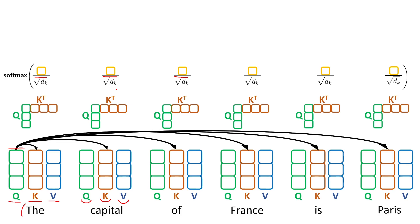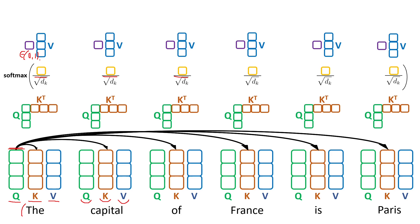The next operation is to apply the softmax to all the scalars, and what you obtain is basically another scalar which has values between 0 and 1 after the softmax operation. What you do with this scalar is to multiply it with the value vector of each token.